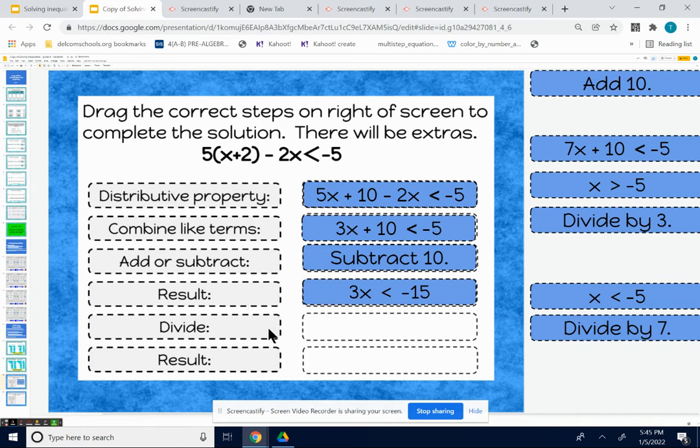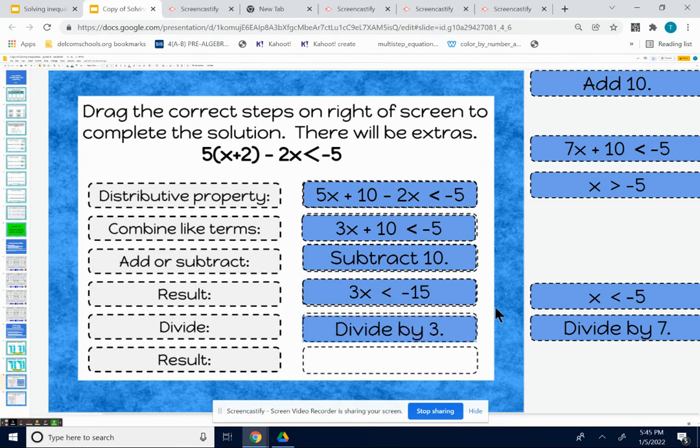The last step, we're going to multiply or divide. We're going to get rid of the multiplied 3, and we're going to do that by dividing both sides by 3. And after we divide both sides by 3, the left side is going to be x. The right side is going to be a negative 5. And now we're dividing by a positive 3 here, guys. So the inequality symbol stays. So our answer is x less than negative 5.